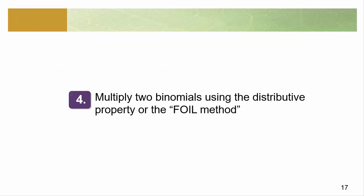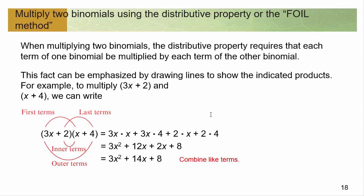And that's where they get the FOIL method. I'm sure you've all heard of it before, but I'm not a big fan of FOIL, and I'll tell you why. The FOIL method makes you feel like there's this special method you use whenever you're multiplying two binomials — because they have two terms, like a bicycle has two wheels. A binomial has two pieces. Anytime you have something plus something times something plus something — or minus — it's called FOIL because you multiply first terms.